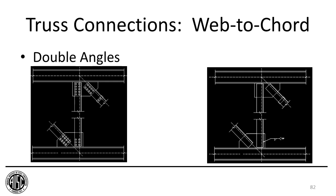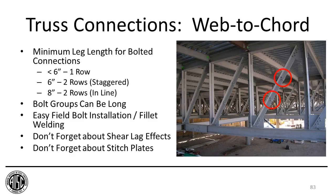With double angles, you can bolt or weld them to the gusset plate very easily. When the leg is less than six inches you can only use one row of bolts; when it's six inches you can use two rows but the bolts need to be staggered; if it's eight inches then you can use two rows in line. If you have high demands in your double angles, the bolt groups can get quite long so check that. An advantage is easy field bolt installation or, if the bolts don't fit up, you can easily fillet-weld the angle to the gusset plate. There's often shear lag effects as the connection is not concentric with the centroid of the double angle, and don't forget your stitch plates for compression members.